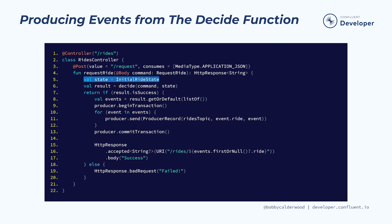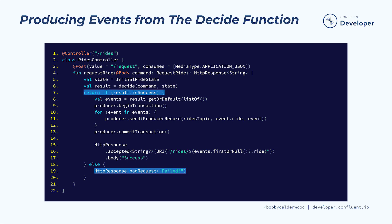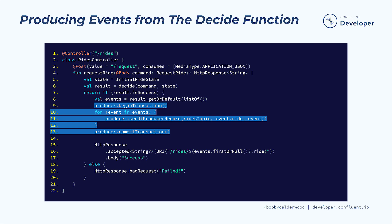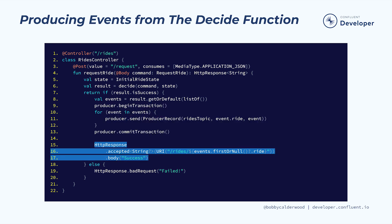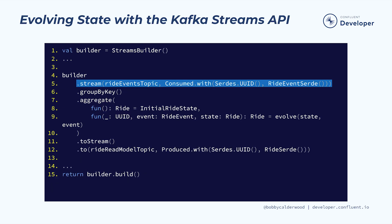We then wire up our command web service endpoint such that when we receive an inbound command request as a transfer type, the application looks up the current state of the ride from our Kafka Streams application, or in this case provides the initial ride state, and passes both the current state and the command to the decide function. If the decide function returns an error, the application responds to the command web service request with that error. On success, the decide function returns a sequence of events, which the application publishes in order to the proper event stream topic using our configured Kafka producer.